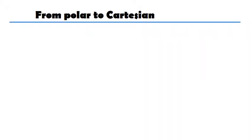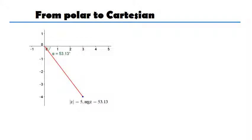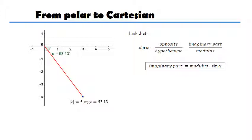Go from polar to Cartesian. Again, I use a little bit of trigonometry. Here's my Argand diagram. And how do I go now? How do I get my 3 and my minus 4? Well, this is how you do it. You have to think that sine is opposite divided by hypotenuse. So the sine is actually going to be the imaginary part divided by the modulus.